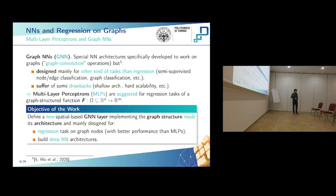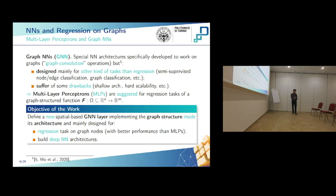So in general, for regression on graph-structured functions, we have to take into account the classic multi-layer perceptrons. Therefore, our objective is to define a new spatial-based GNN layer that uses the graph structure and incorporates it inside the neural network architecture, such that we are able to perform regression tasks with performances better than MLPs, and that lets us build deep neural networks.